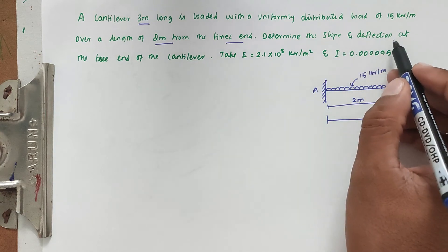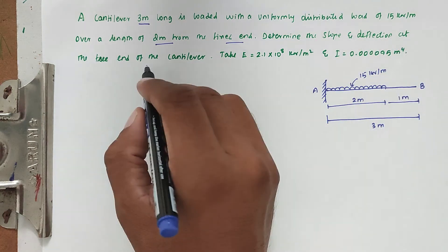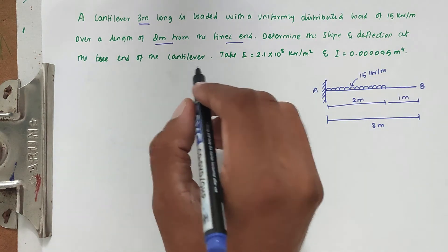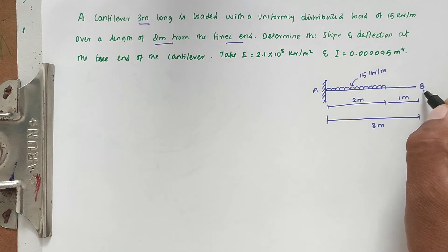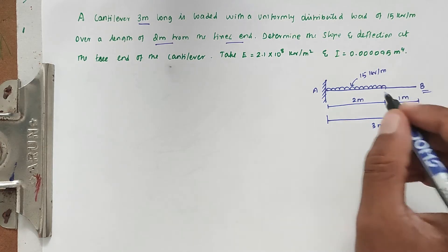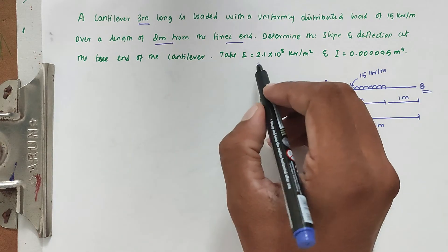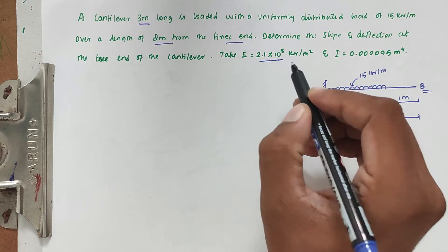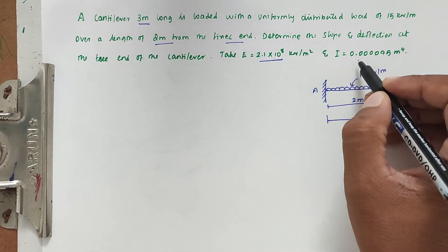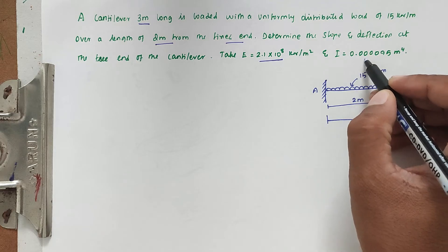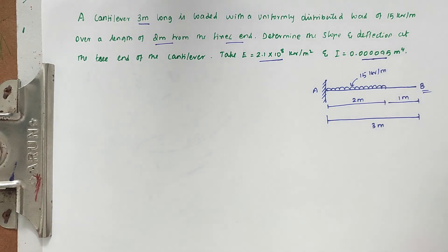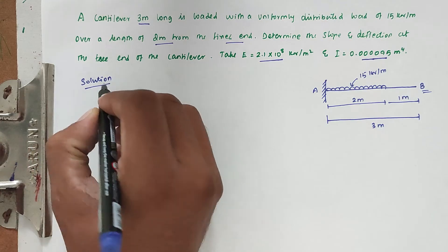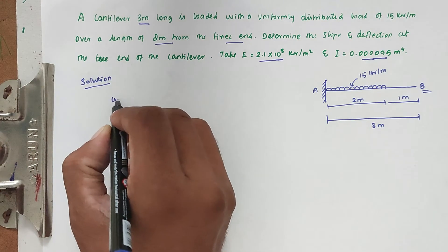We have to determine the slope and deflection at the free end B of the cantilever. Given values: E equals 2.1 × 10⁸ kilonewtons per meter squared, and I equals 0.000095 meter to the power 4.